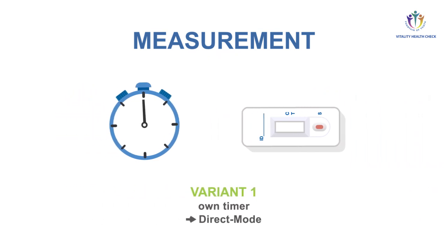For variant one, own timer and immediate mode of the VHC reader, set your timer to 15 minutes.